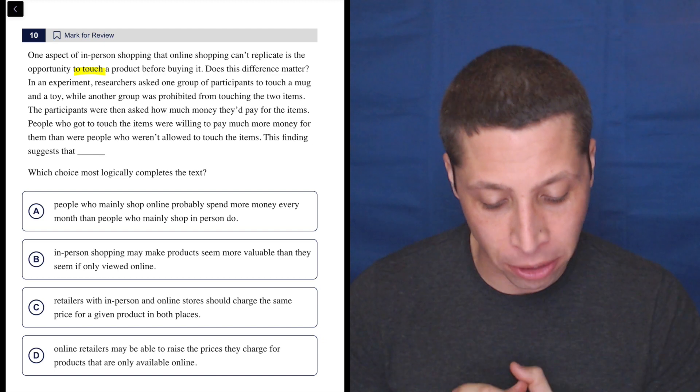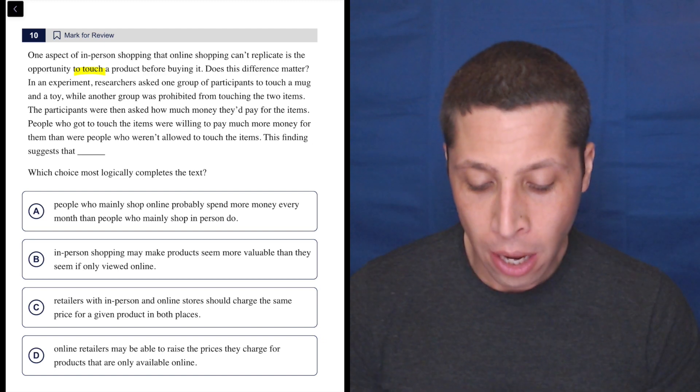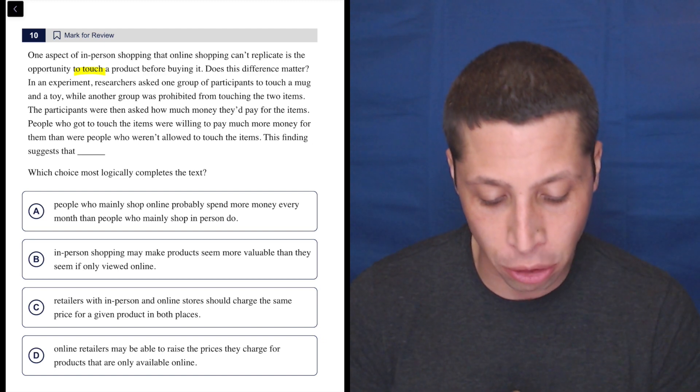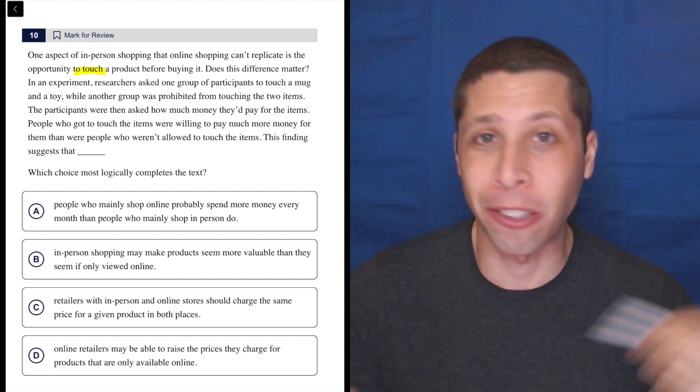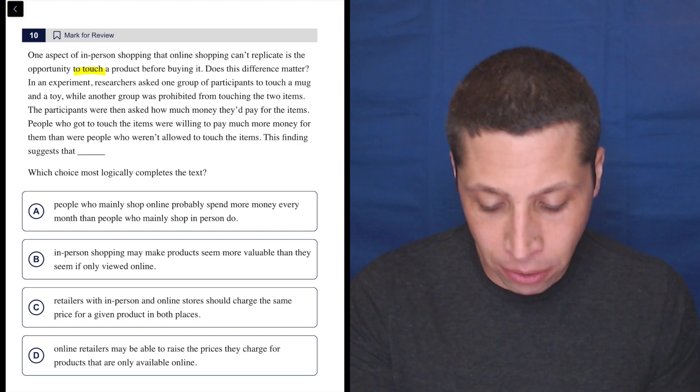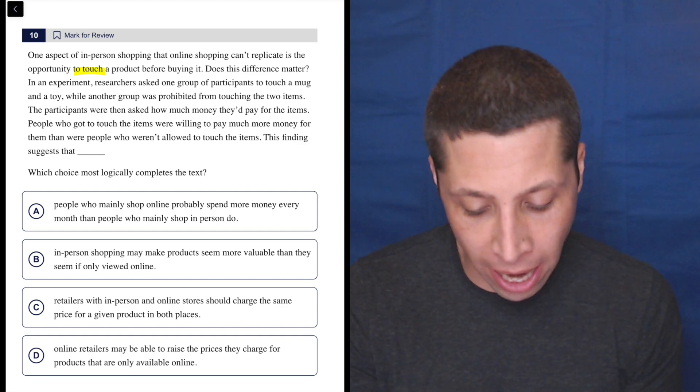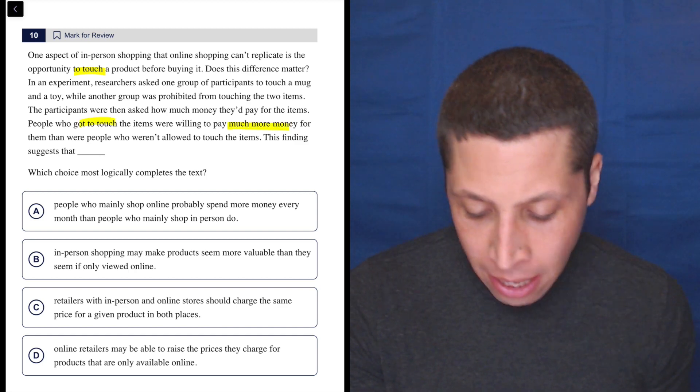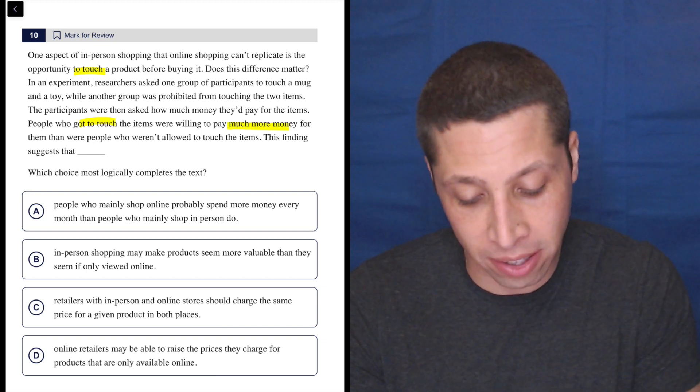In an experiment, researchers asked one group of participants to touch a mug and a toy while another group was prohibited from touching the two items. So again, it's about touch. Main ideas are repeated ideas. The participants were then asked how much money they'd pay for the items. People who got to touch the items were willing to pay much more money for them than were people who weren't allowed to touch the items.